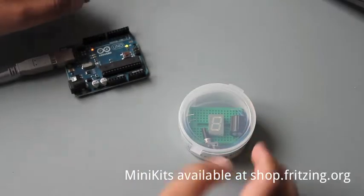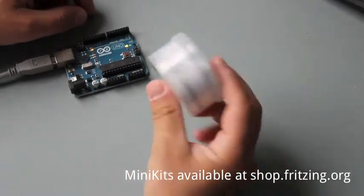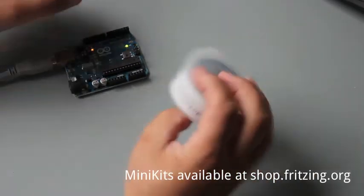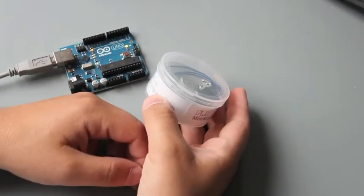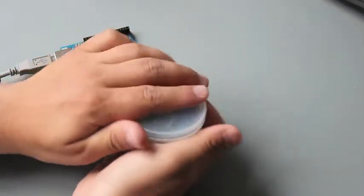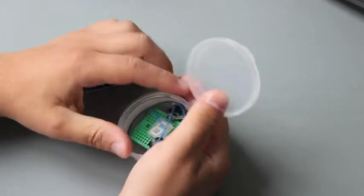Hi! Today I show you the Fritzing minikit counting knob. It comes in this little box. Let's see what's inside.